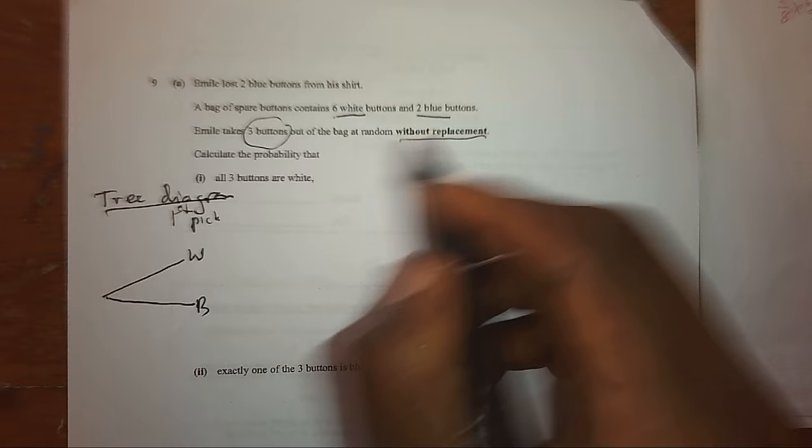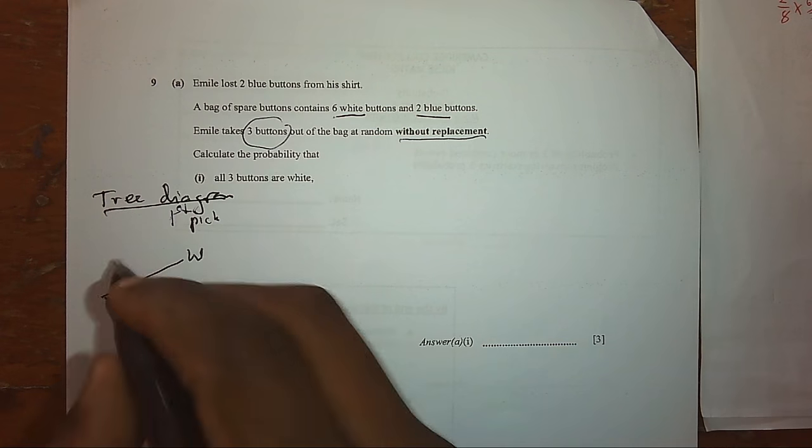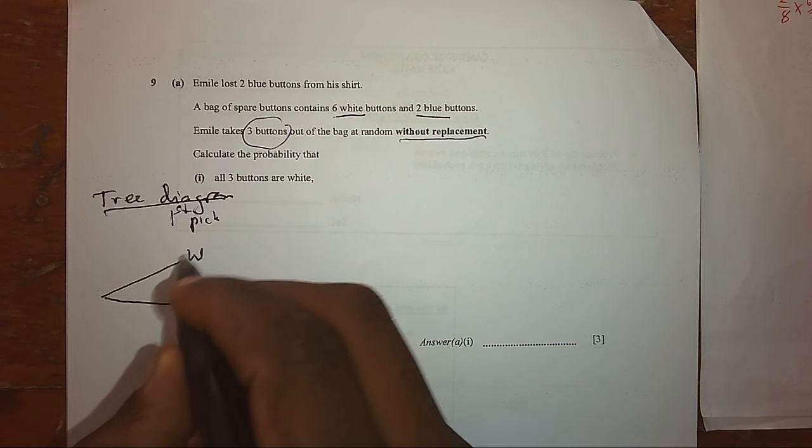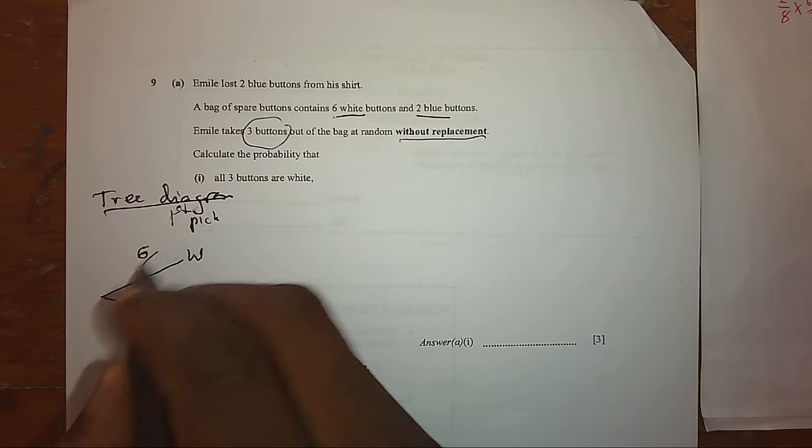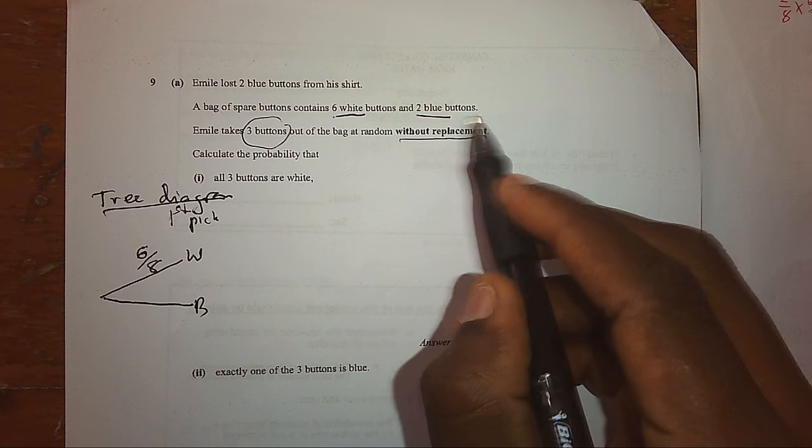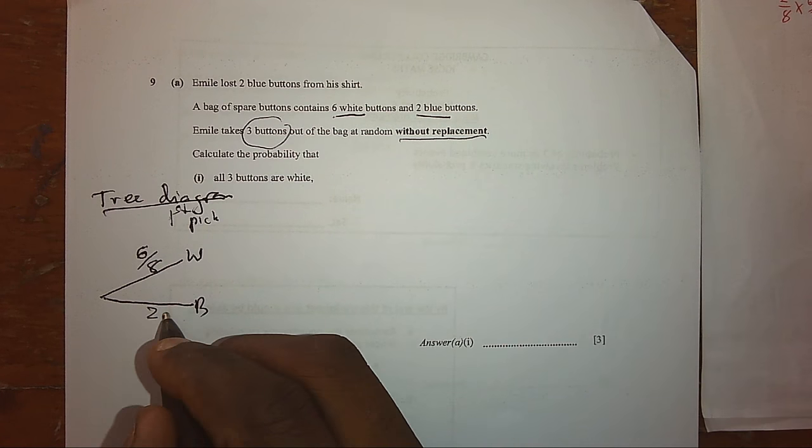So, the probability for picking the white button will be six over eight, and the probability for picking the blue button will be two over eight.